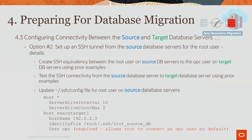After you create the SSH equivalency and you test the SSH equivalency using the keys, then you also need to update the SSH config file. This is on the source database server for the root user. What we are doing here is setting up connectivity from the root user to the OPC user, from the source database server to the target database servers.